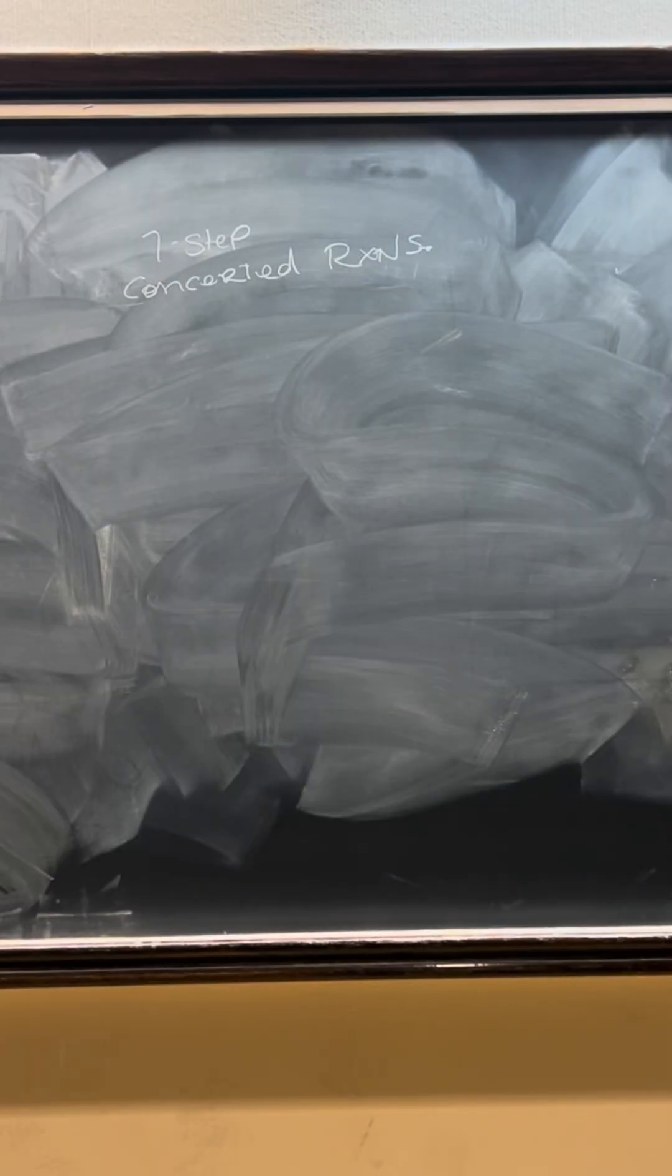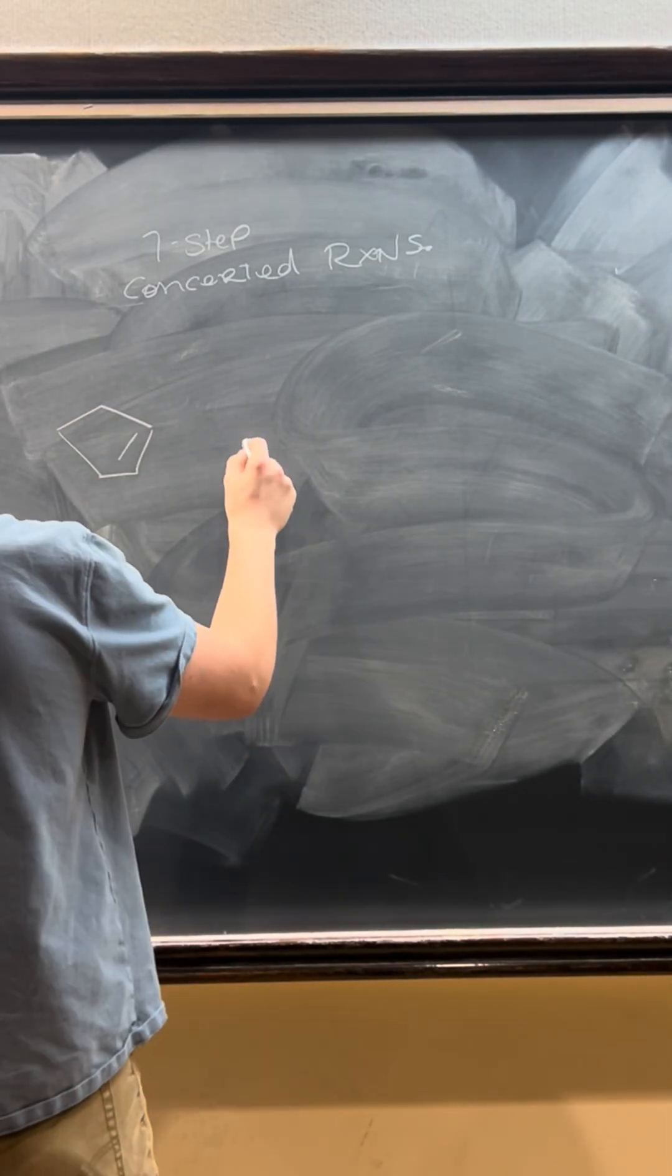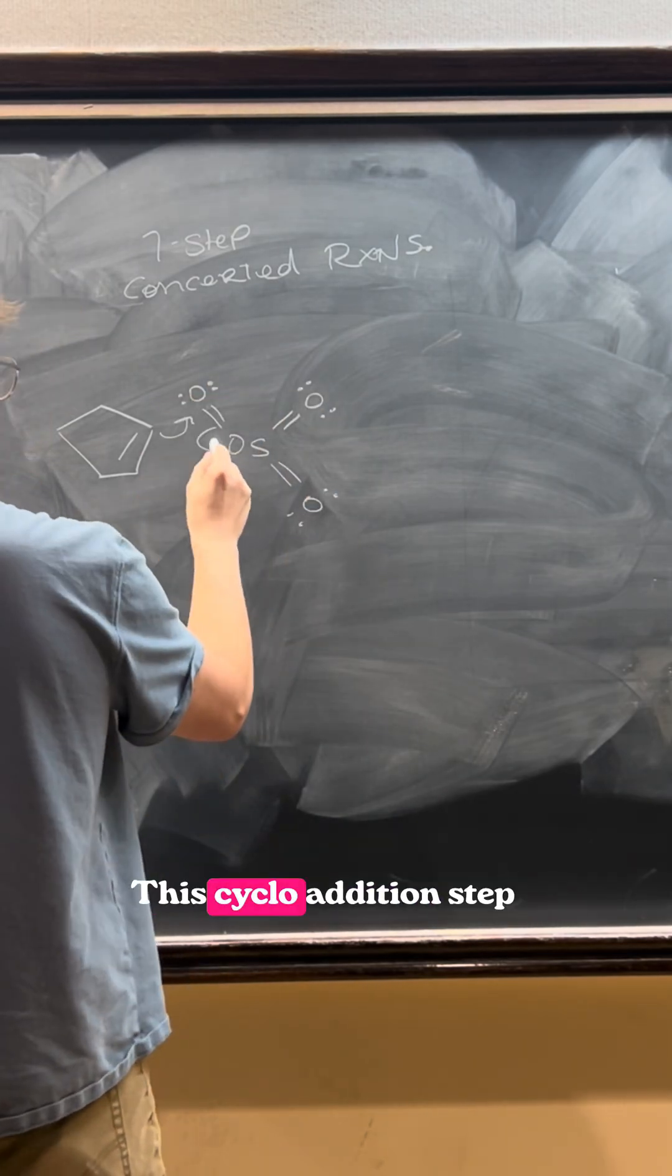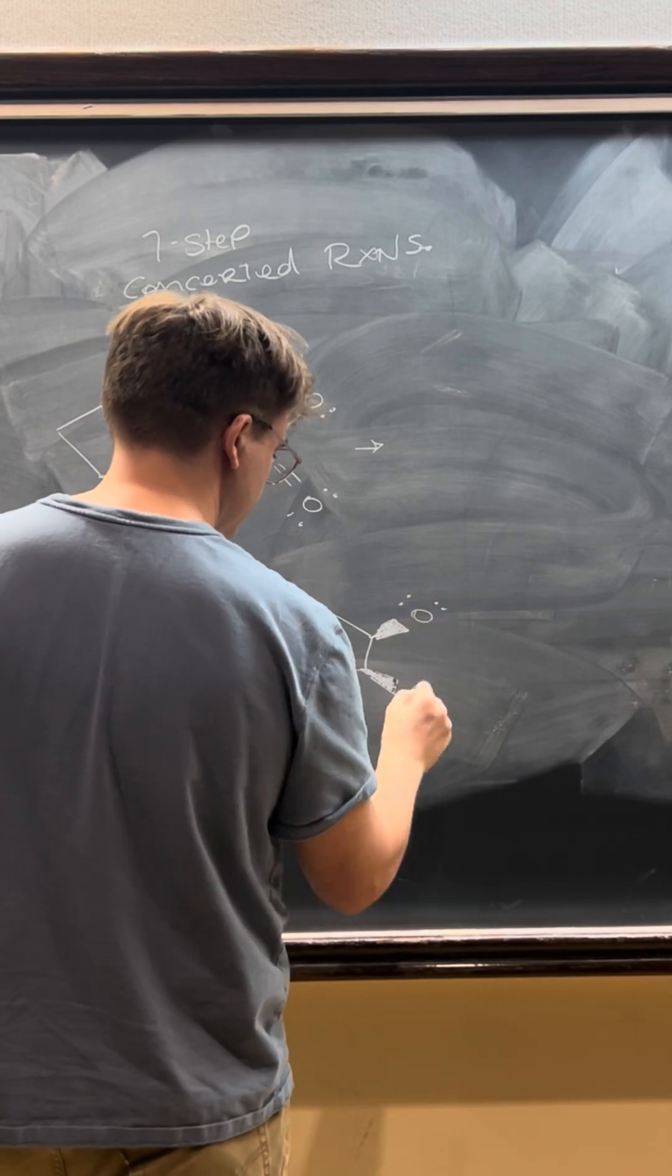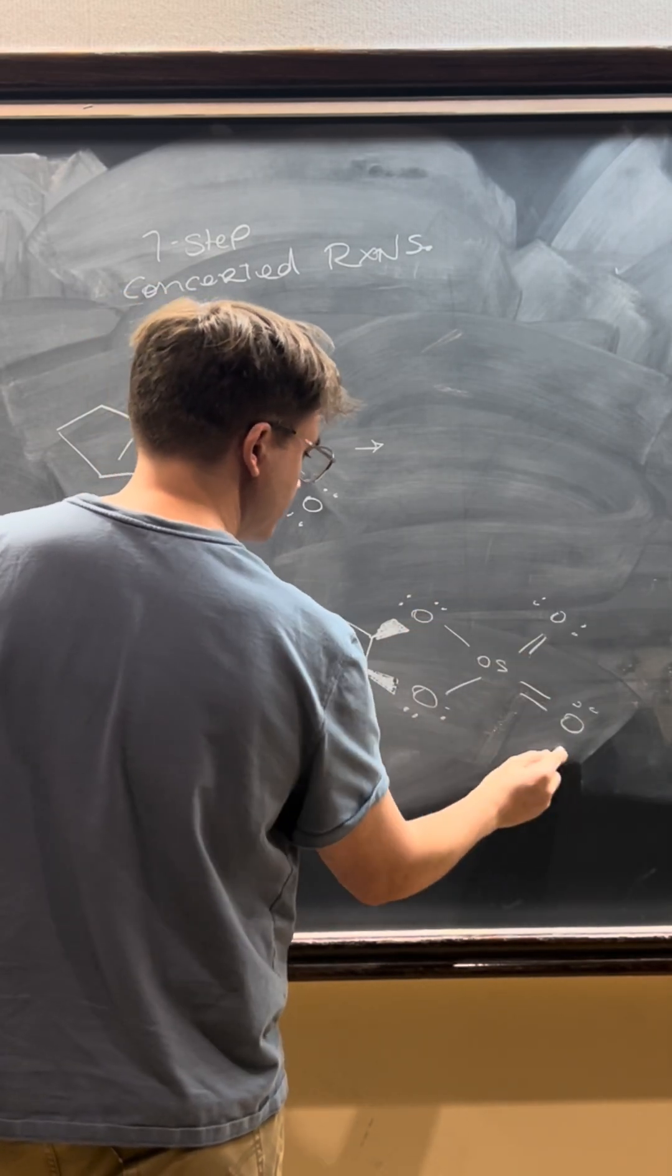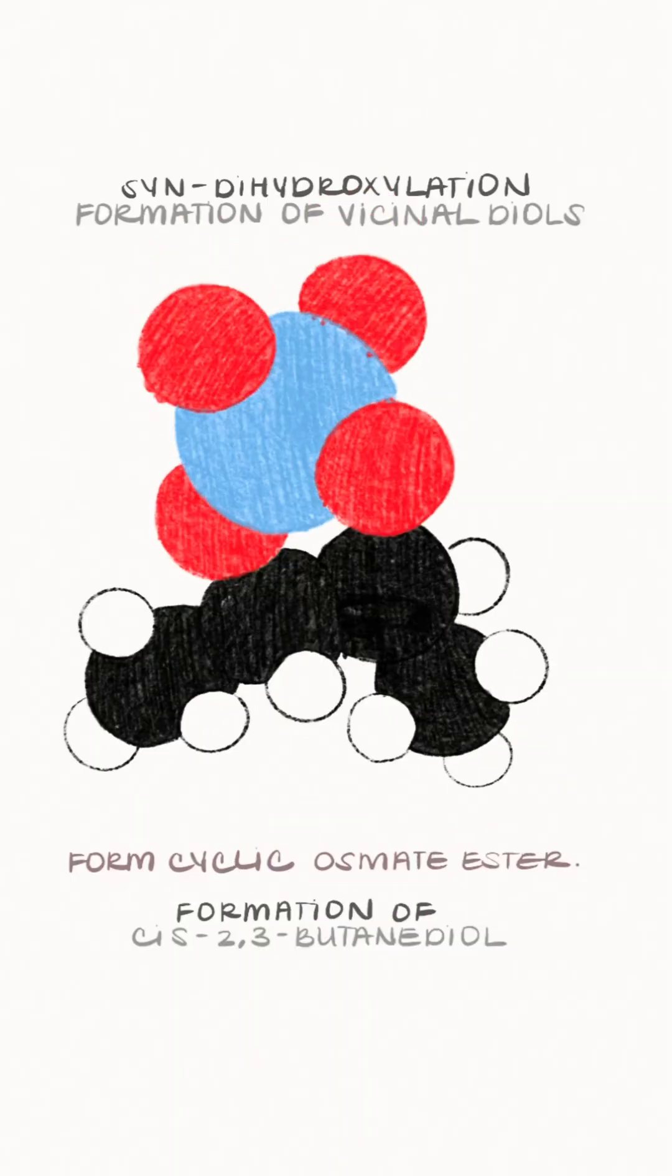You can use similar lines of thinking when thinking about this syn-dihydroxylation reaction with osmium tetroxide. This cycloaddition step only happens at a single face of the alkene, so the two oxygens are delivered to the same face of the alkene throughout the reaction.